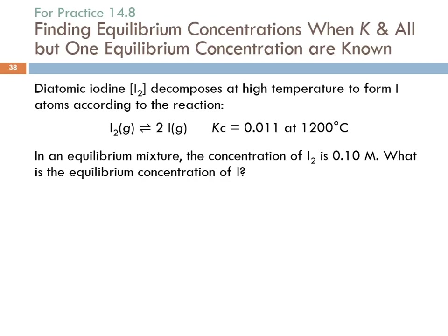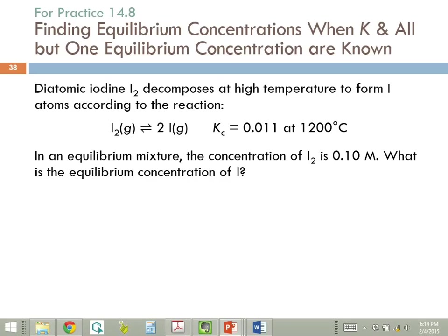So let's look at the first method — we'll just do an example. We've got diatomic iodine decomposing at high temperatures to form iodine atoms according to this reaction; the equilibrium constant is given. So if we have an equilibrium mixture with a concentration of iodine being 0.1 molar, what's the equilibrium concentration of the iodine atoms? Here we know there are only two species, we know the equilibrium concentration of all but one of them, and we know the equilibrium constant. So we have to write the equilibrium expression and put the numbers in.